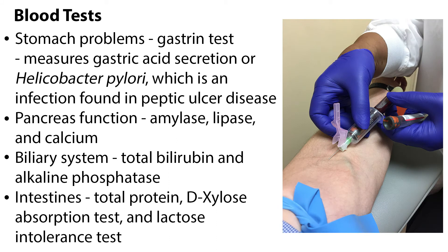A blood test to evaluate stomach problems is the gastrin test. This test measures gastric acid secretion or Helicobacter pylori, which is an infection found in peptic ulcer disease. Blood tests for amylase, lipase, and calcium evaluate the pancreas function.